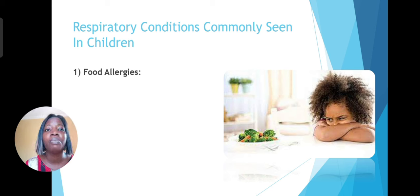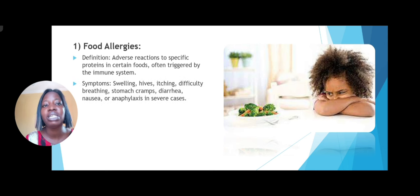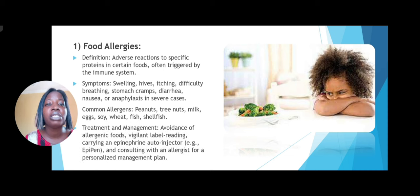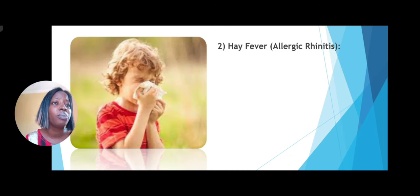The first type is food allergies — adverse reactions to certain proteins in certain foods can trigger allergic reactions such as swelling, itching, and difficulty in breathing. Common allergens found in food are peanuts, tree nuts, milk, eggs, soy, fish, and the rest. Avoidance of these allergenic foods will definitely prevent the person from developing an allergic reaction, and we have the EpiPen to help stop these symptoms from occurring.